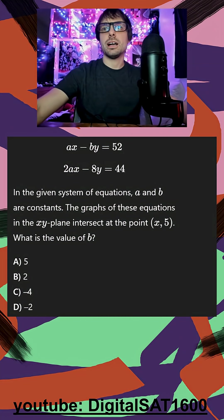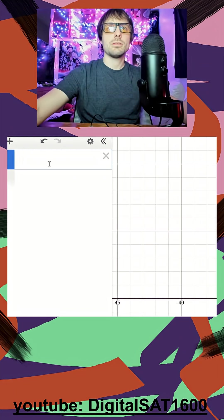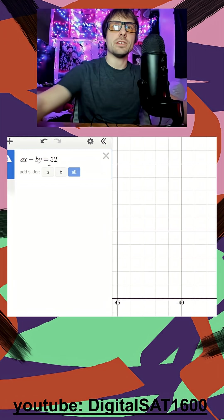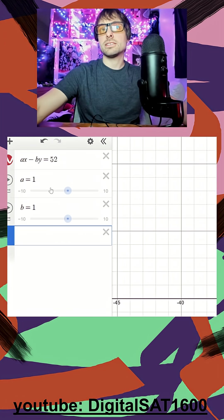I see a system of equations. I'm jumping straight to Desmos. I'm going to plug in my first equation, ax minus by equals 52. Add my sliders.